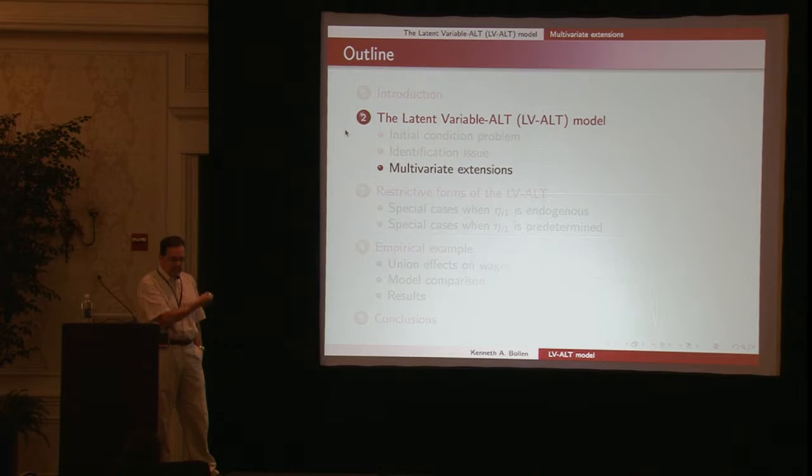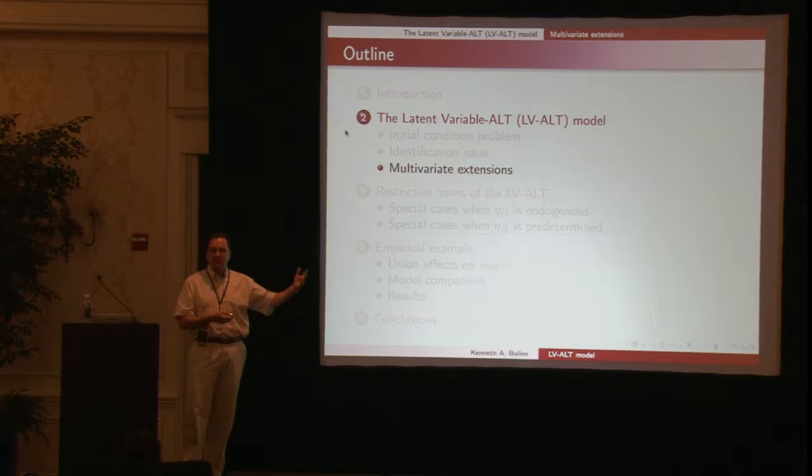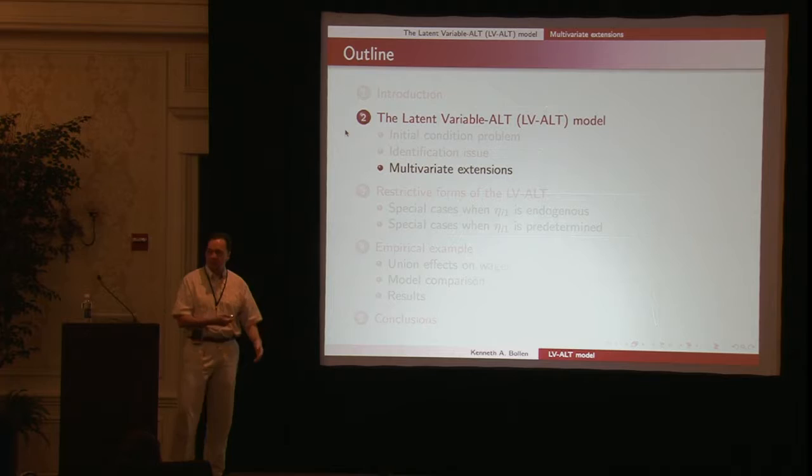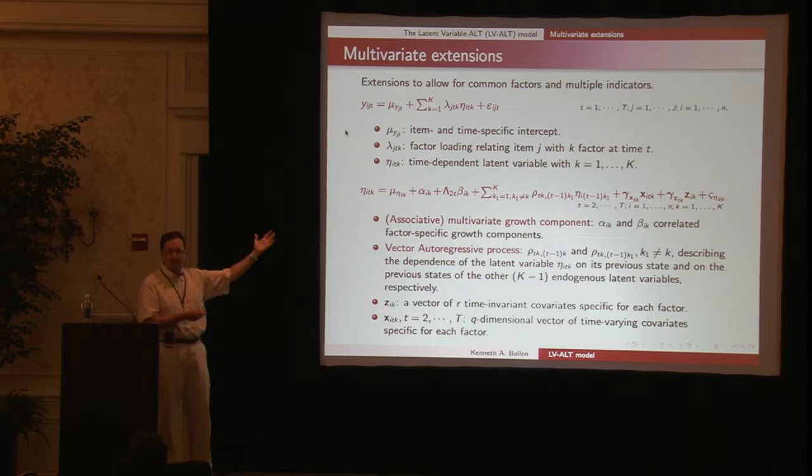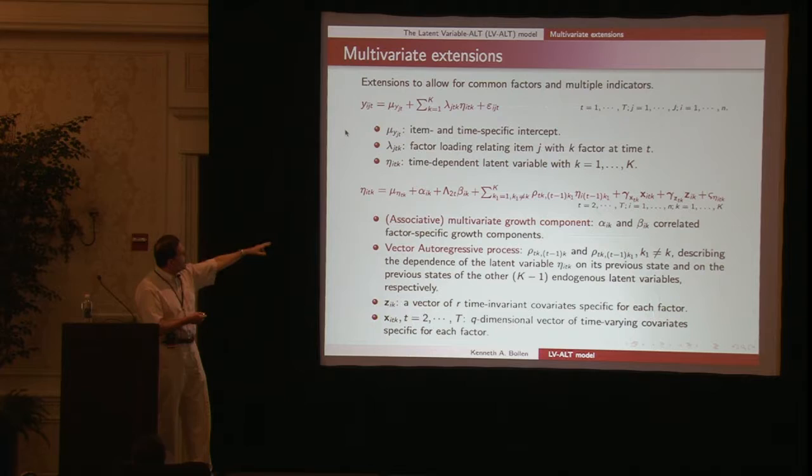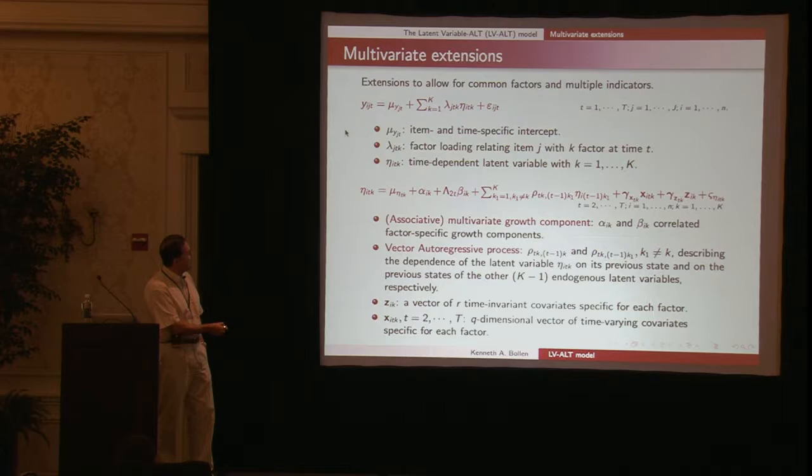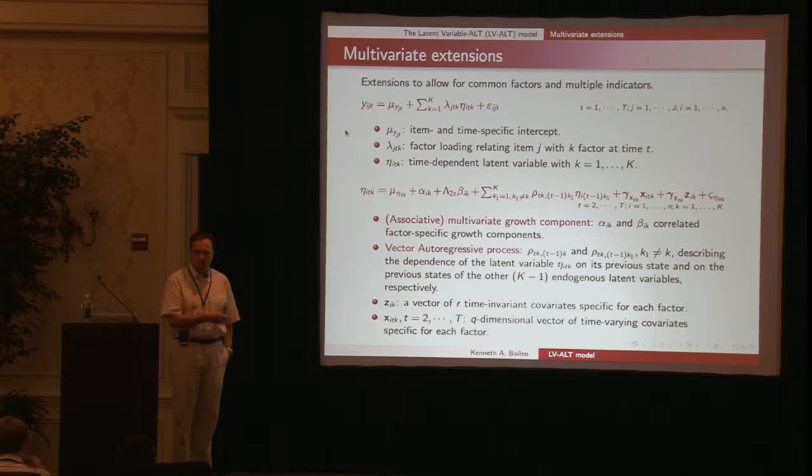What I showed before was for a single latent variable over time. Now suppose you had multiple latent variables also influencing that focal latent variable. This is a further generalization. We now have multiple latent variables with multiple indicators. The same indicator could measure different latent variables if wanted. The middle equation introduces the possibility that other latent variables might influence additional latent variables. This is extremely general structure.